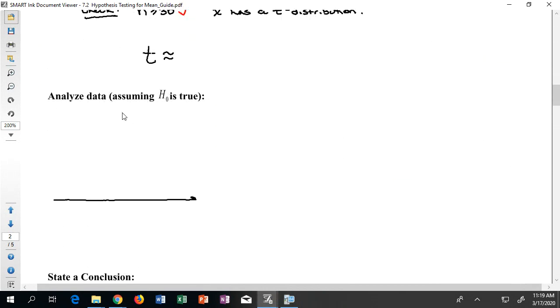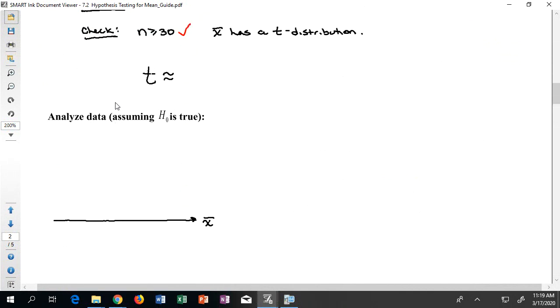Again, I'm going to create the same sort of picture that I've always created. I'm going to say there are a bunch of x bars that I could have gotten, and they line up on a number line. And they fall into the shape, not of a normal distribution, but of a t distribution. So on the picture here, I'm going to go ahead and sketch out what my t distribution looks like. Be ready. It's not a normal distribution. And so it's a different picture. Here's what my t distribution looks like.